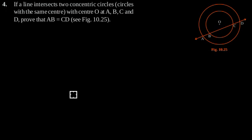Exercise 10.4 question number 4. If a line intersects two concentric circles (circles with the same center) with center O at A, B, C and D, prove that AB is equal to CD as shown in the figure 10.25.